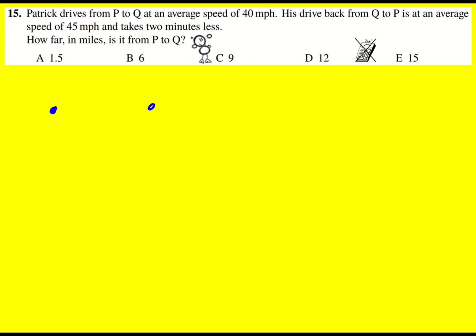I'm just going to draw some diagrams to start off this question. First of all, we're going from P to Q, and the distance is going to be D. The speed is 40 miles per hour, and the time we'll just call T.